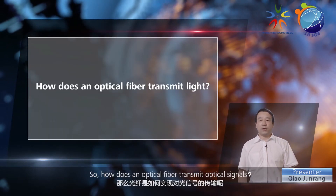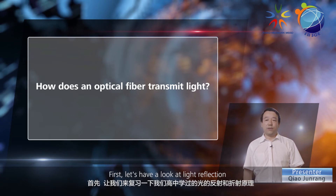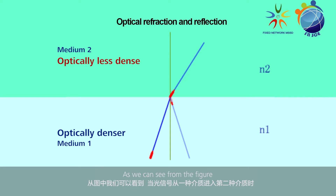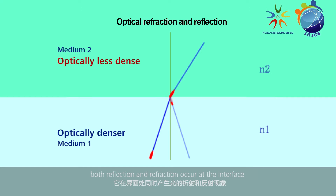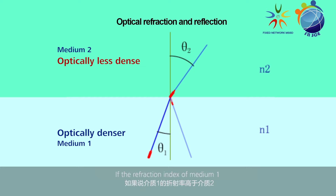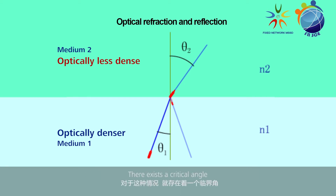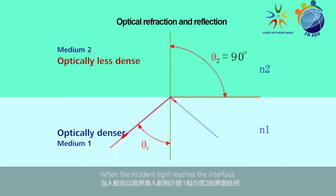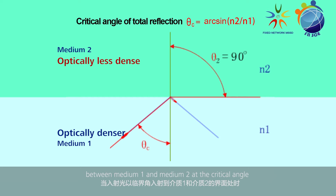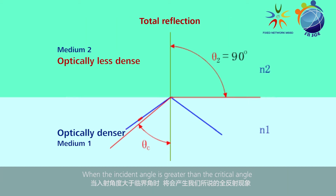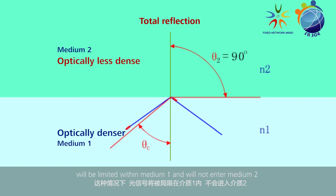So how does an optical fiber transmit optical signals? First, let's have a look at light reflection and refraction principles. As we can see from the figure, when an optical signal travels from medium 1 into medium 2, both reflection and refraction occur at the interface. If the refraction index of medium 1 is higher than that of medium 2, the refraction angle is greater than the incident angle. There exists a critical angle — when the incident light reaches the interface at the critical angle, the refraction angle will be 90 degrees, and the optical signal will not enter medium 2. When the incident angle is greater than the critical angle, total reflection occurs.